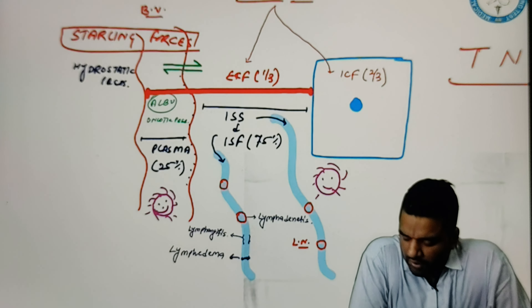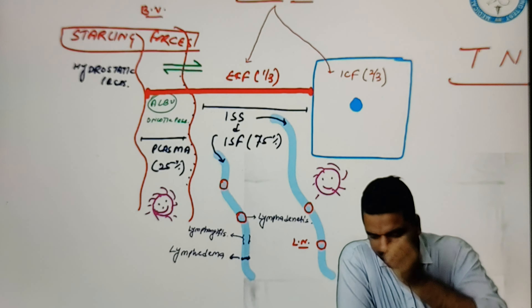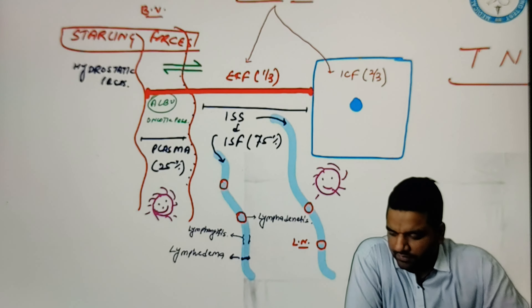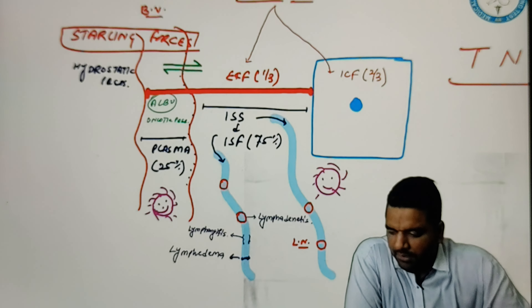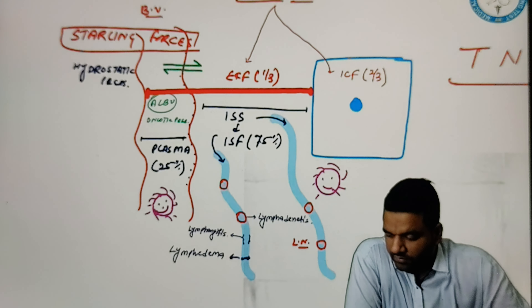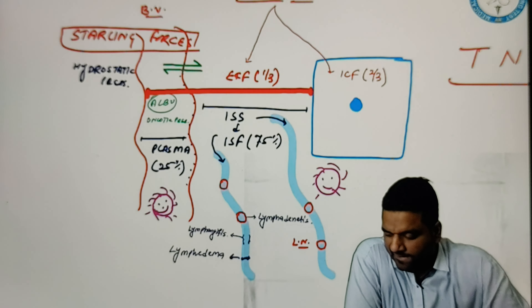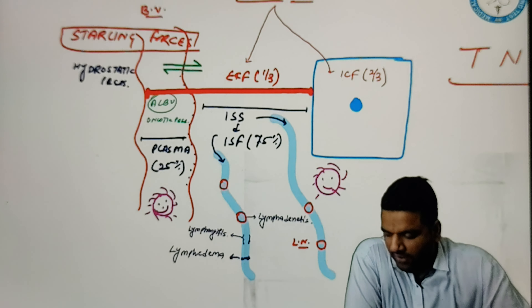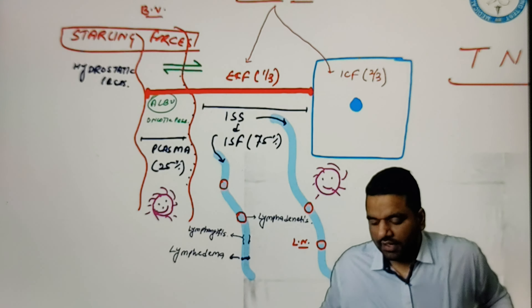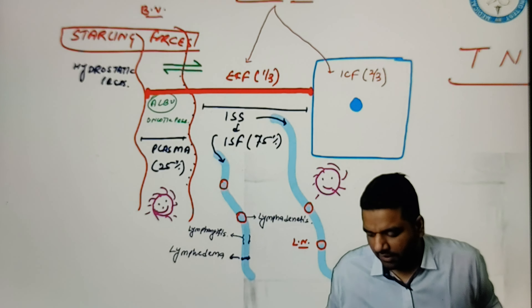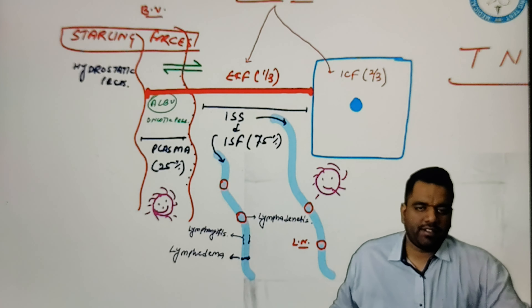So this is all about the lymphatic system. I hope now you can easily understand what is the lymphatic system, what is its role, and what would happen if these systems are abnormal. We have discussed many things about the lymphatic system, about the cell, how this cell looks like, and the different components. Now let's have a break of 20 minutes. We will start class at 6:20.